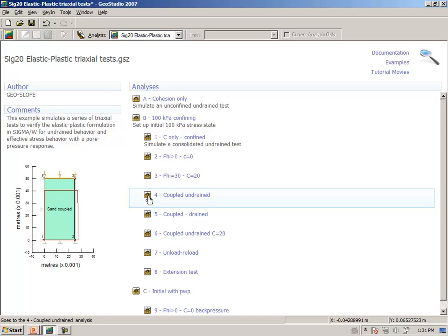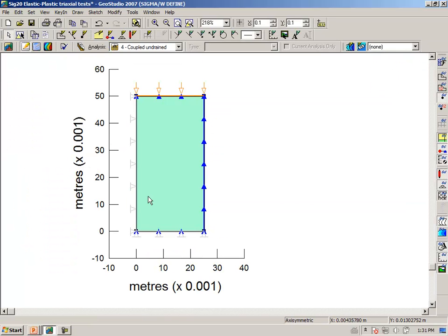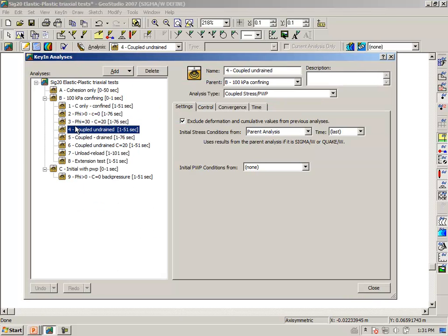Coupled undrained. We have, in essence, applied a confining stress. Notice that our initial stress, it comes from the parent, and the parent is an analysis that was done to establish a state of stress in the sample of 100 kPa. So this is like consolidating the sample to a confining stress of 100 kPa. So that is our starting stress, and the initial stress comes from the parent, and we will have no starting pore water pressure conditions like I've already mentioned.